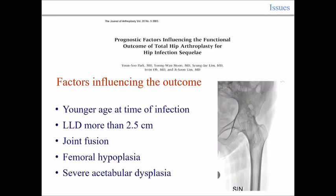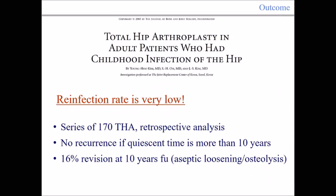Factors influencing the outcome are: younger age at the time of infection, if there is a leg length discrepancy of more than two and a half centimeters, if there is a joint fusion — a spontaneous fusion because of the infection as seen in tuberculosis — femoral hypoplasia, and in cases of severe acetabular dysplasia. These are all factors that can negatively influence the outcome.